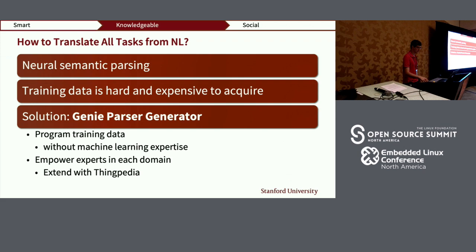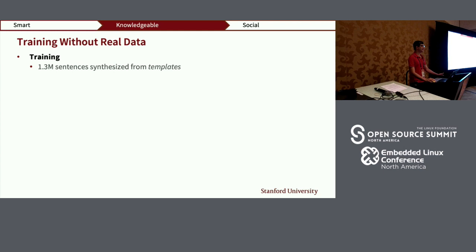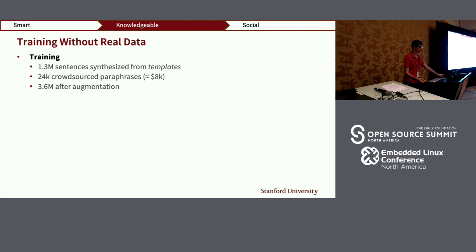How do we get Genie to produce a virtual assistant without real data? For training, we acquired 1.3 million sentences synthesized from templates provided by domain experts. Out of this, we crowdsourced 24,000 sentences using Mechanical Turk — about $8,000, roughly half a quarter of a graduate student, so relatively cheap. After data augmentation, our training set totaled 3.6 million sentences.